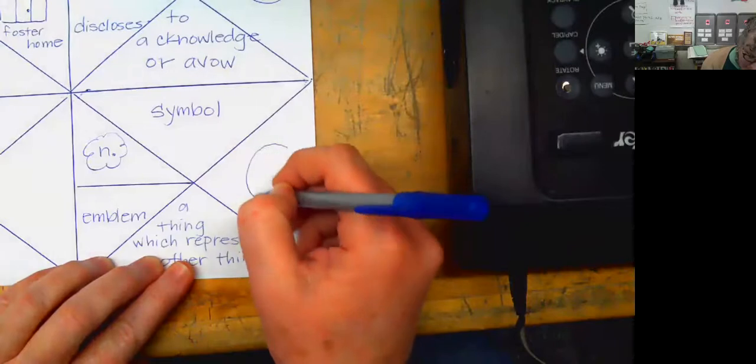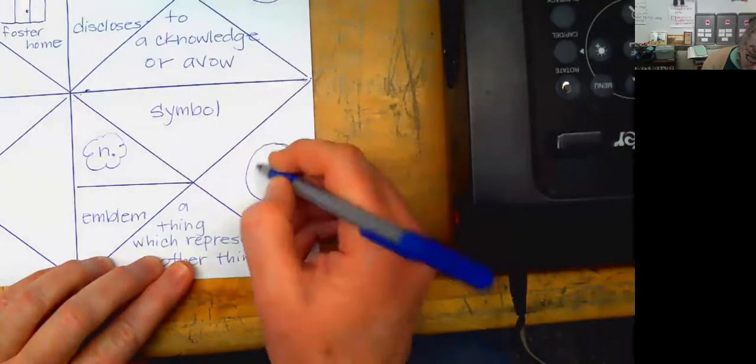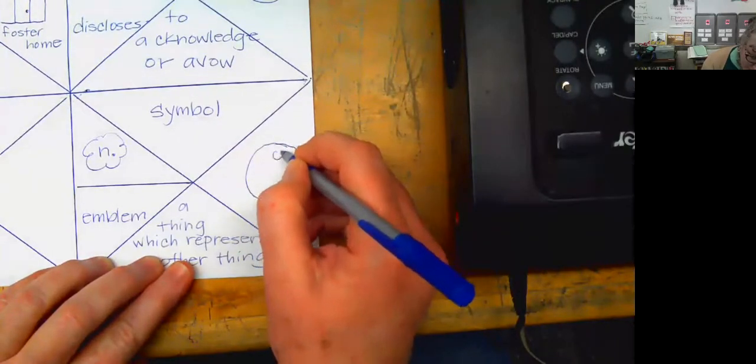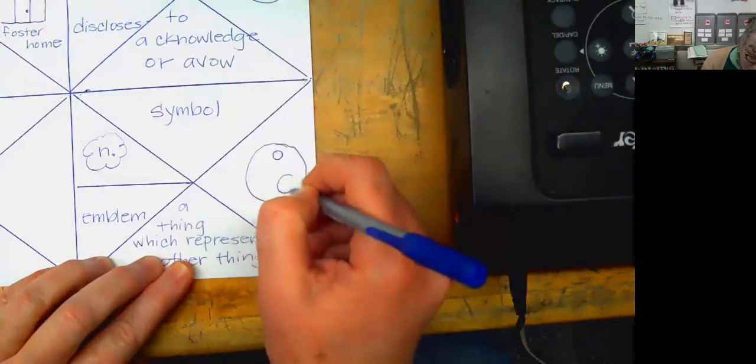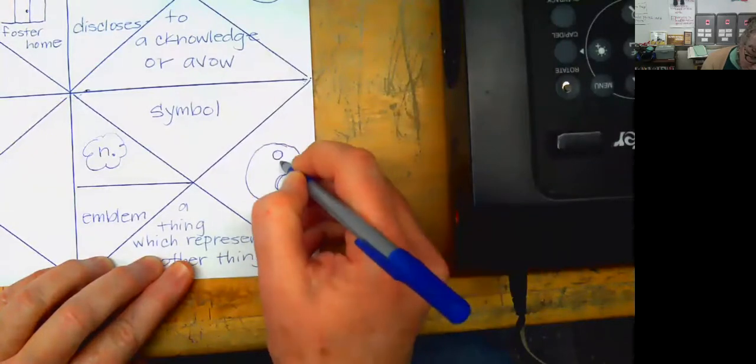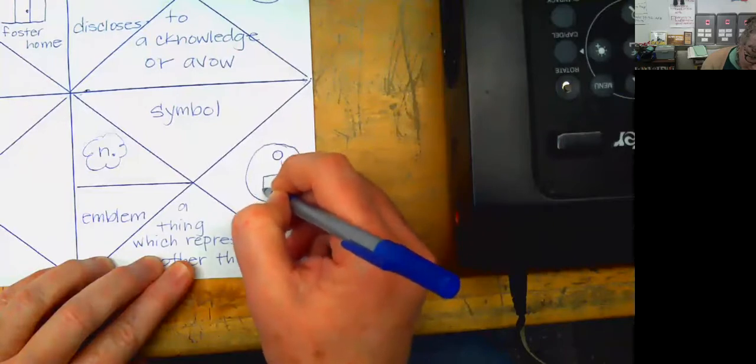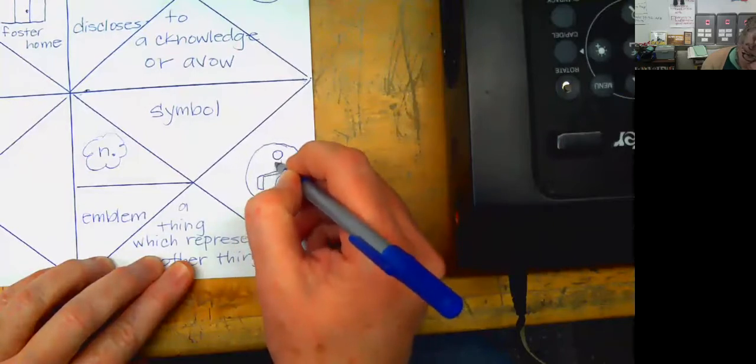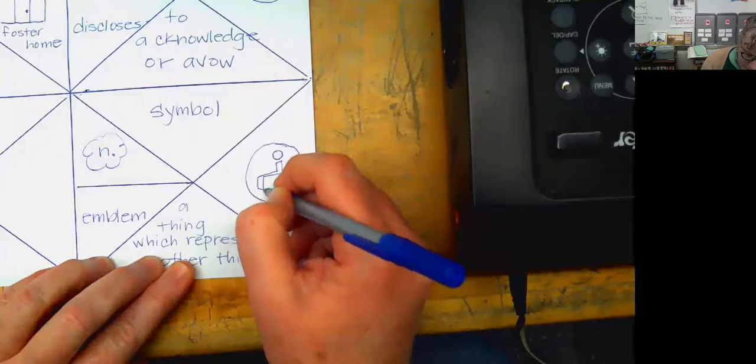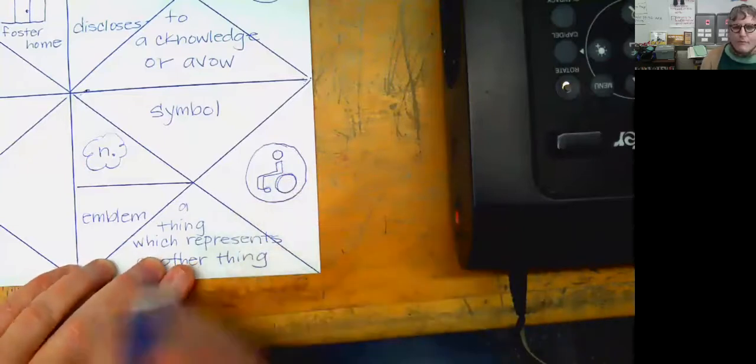I'm trying to remember exactly what that symbol looks like. So usually it's a circle. Usually it has a person that has a big, huge wheel on a wheelchair. And then it has like a symbol that kind of looks like this, right? Like a person sitting in a wheelchair.